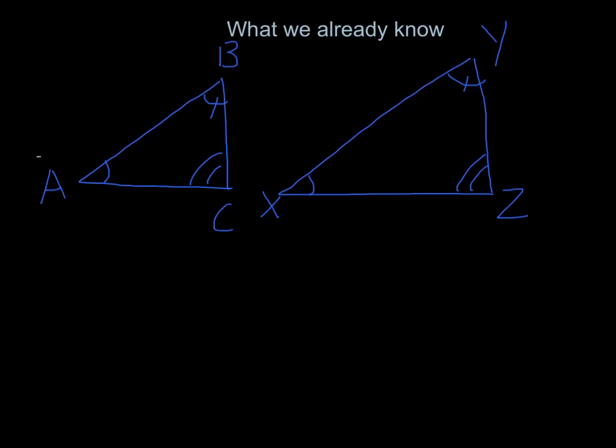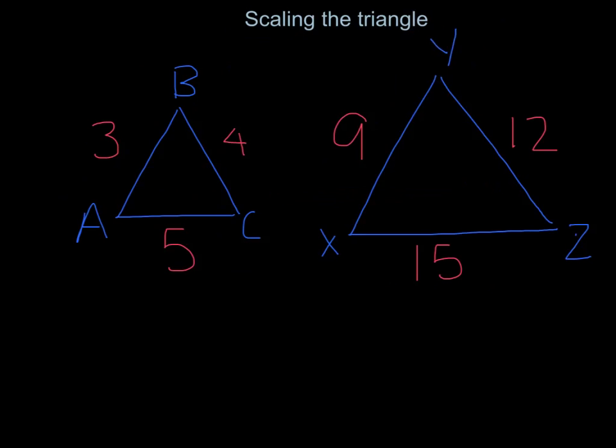However, the triangles themselves are not going to be congruent because their sides have different lengths. So now, since we know that one similar triangle is a scaled up or scaled down version of the other, we can find a relationship between the side lengths.